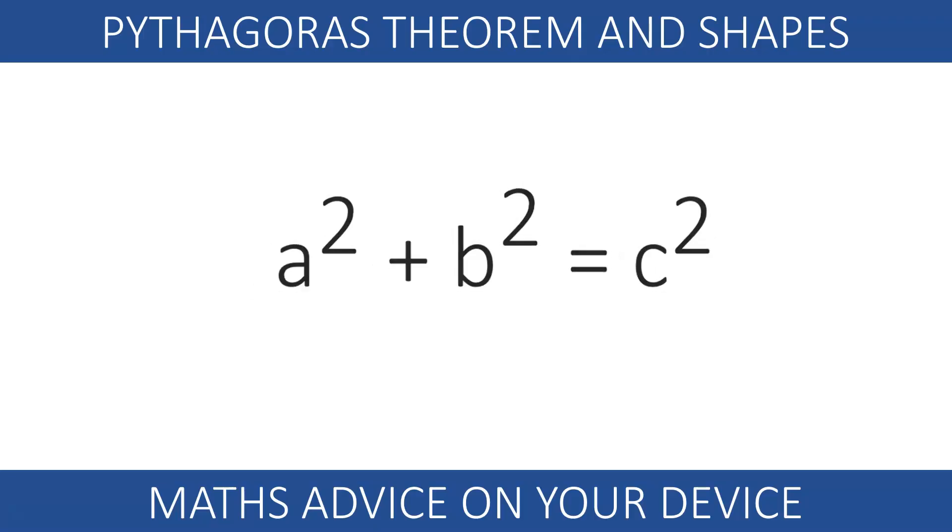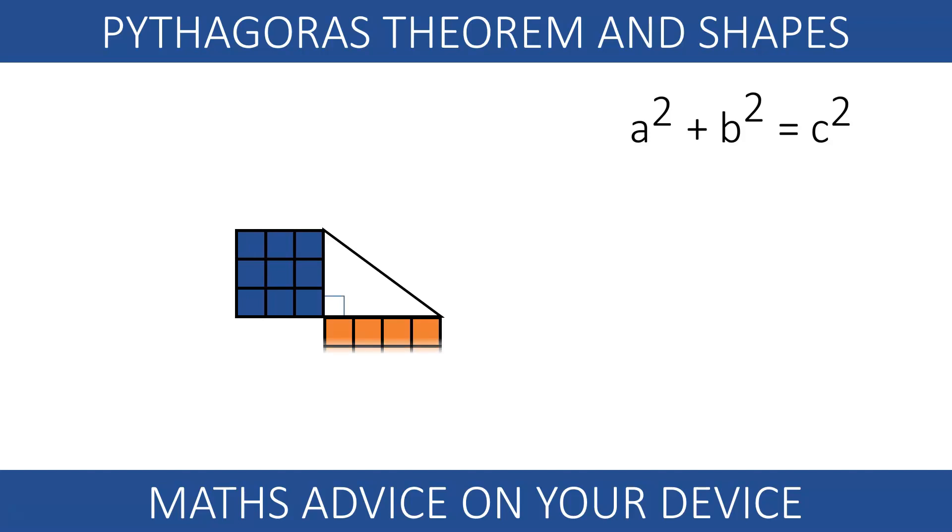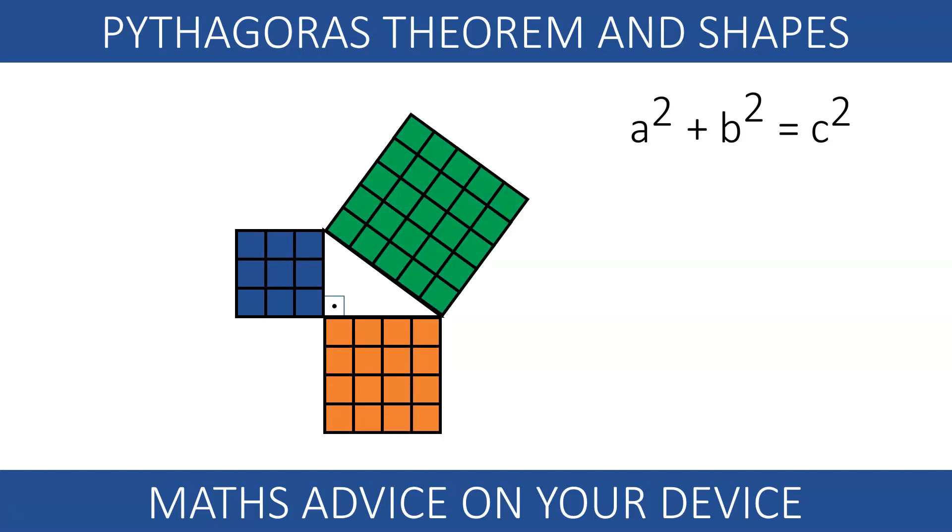Pythagoras' theorem can be visualised using areas. In any right-angled triangle, if we draw squares emerging from the three sides, we'll find out that the sum of the smaller squares equals the big square.